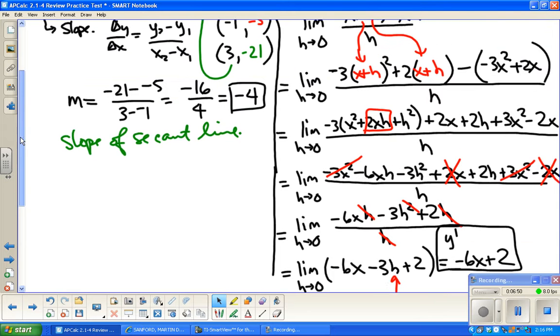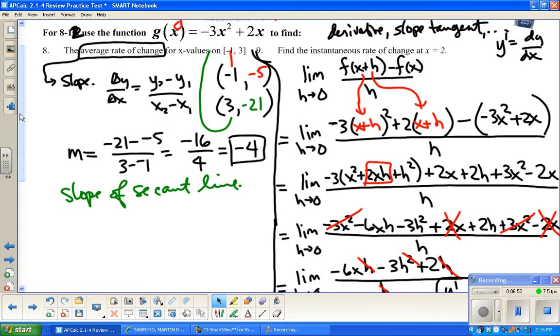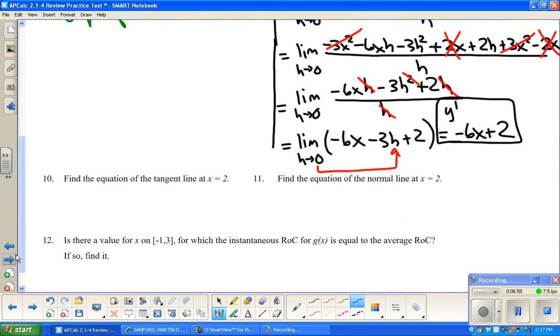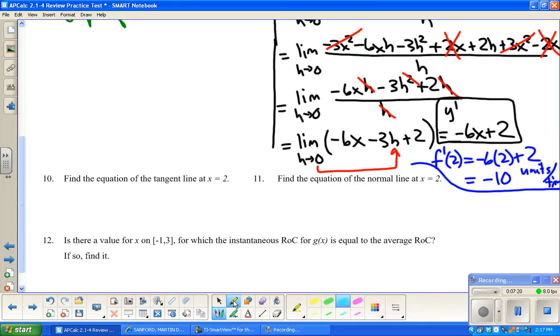Now, the question is, what x value did they ask us to do this for? Well, x equals 2. So I'm just going to substitute 2 in. So this becomes f prime of 2 equals negative 6 times 2 plus 2, so negative 12 plus 2, negative 10. And if I had a context to go with this, it might be meters per second or feet per second or units per time unit, usually. I'm not going to make a big stink out of putting those units on there.